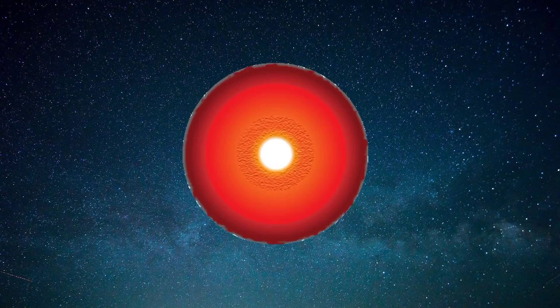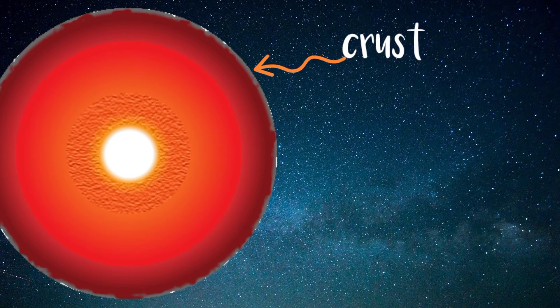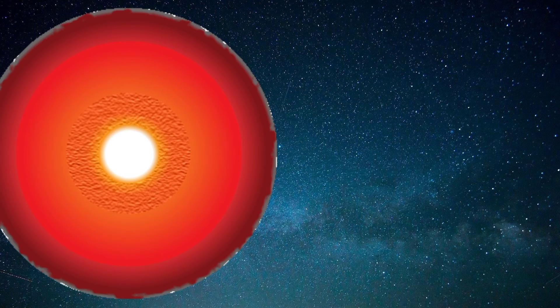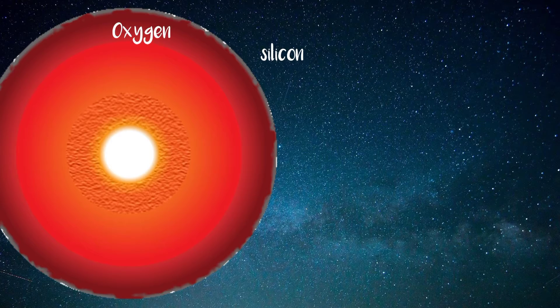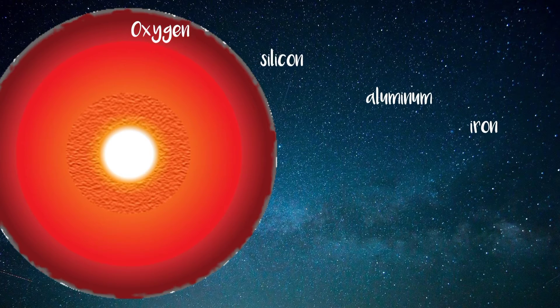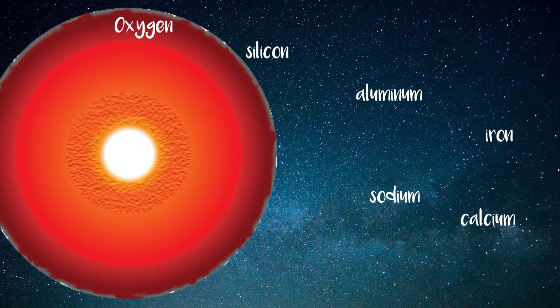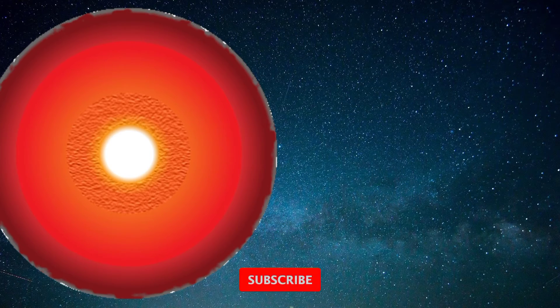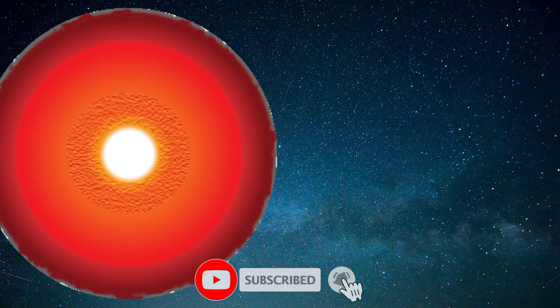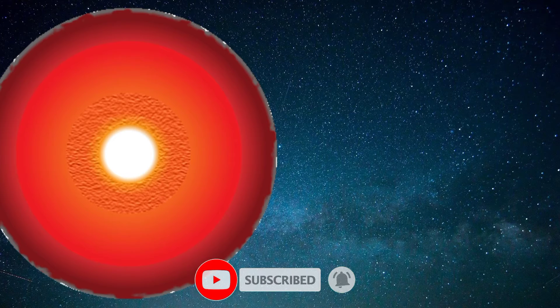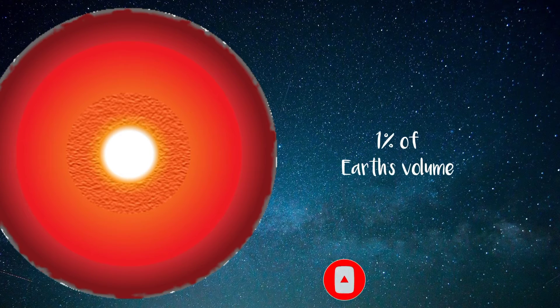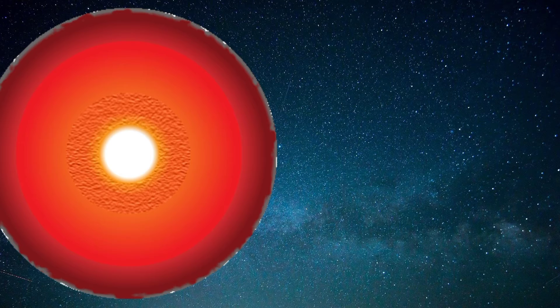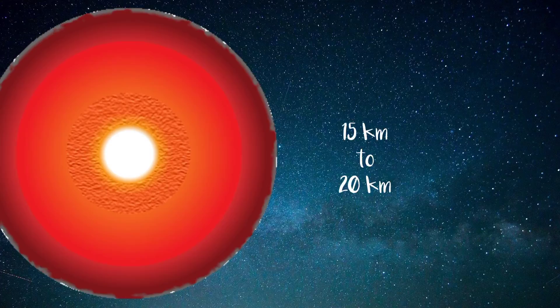The rocky surface layer of Earth, called the crust, is made up of mostly oxygen, silicon, aluminum, iron, calcium, sodium, potassium, and magnesium. Earth's crust is a shell on the outside of Earth, accounting for less than 1% of Earth's volume. The average thickness of the crust is about 15 to 20 kilometers.